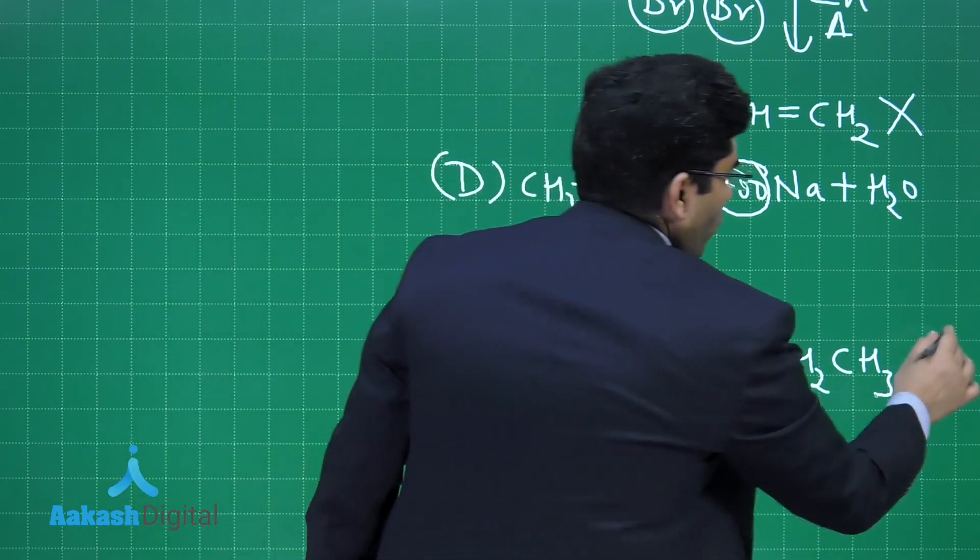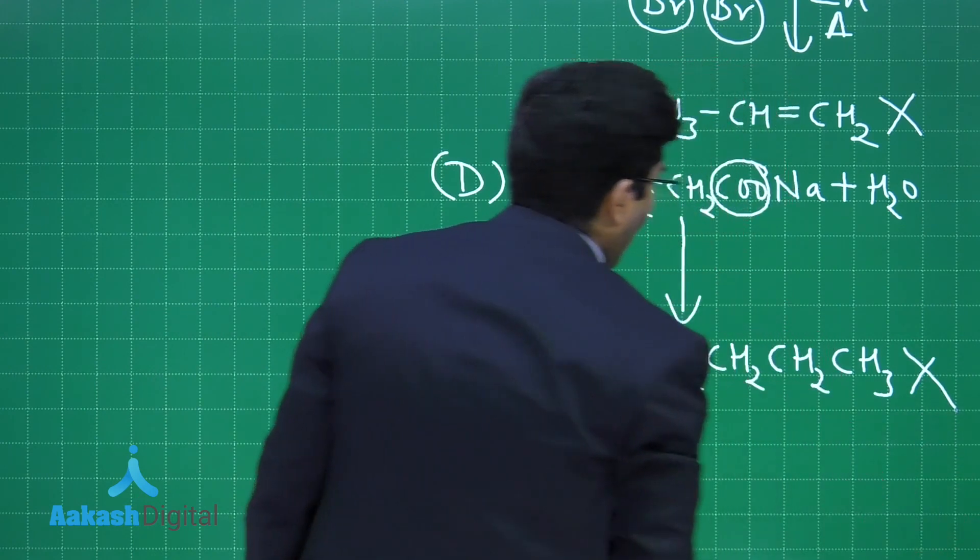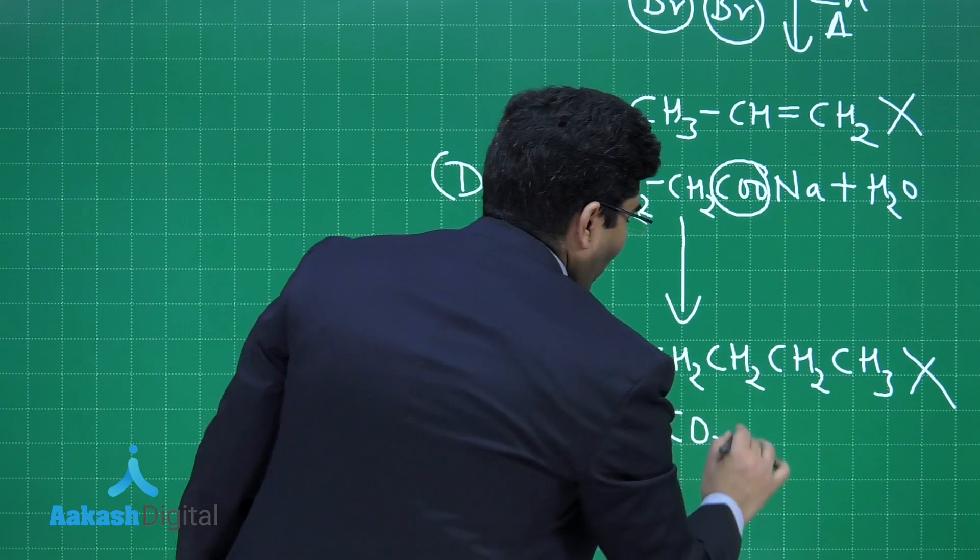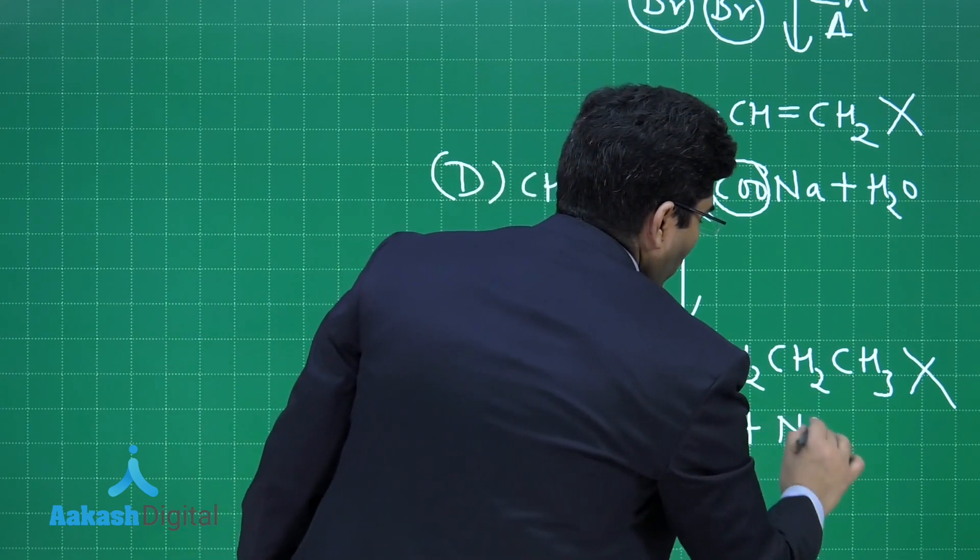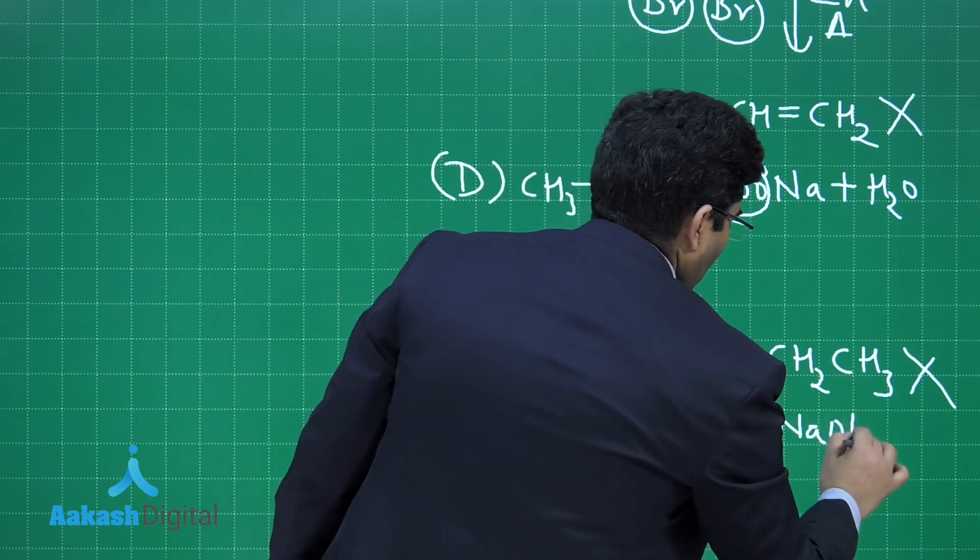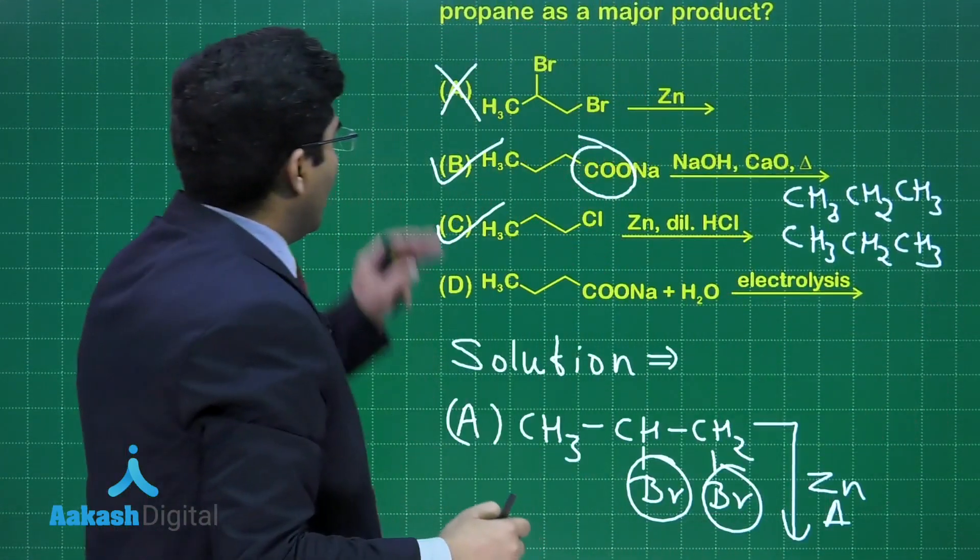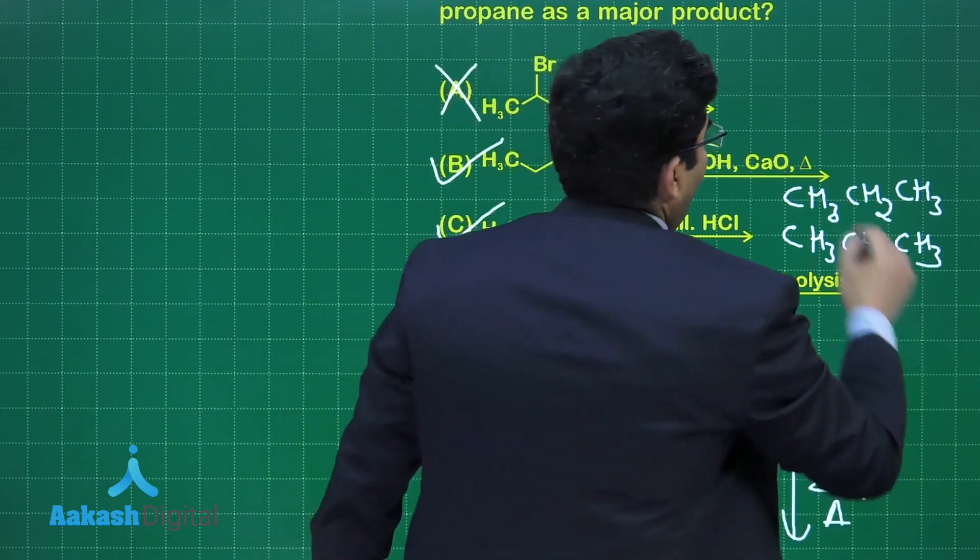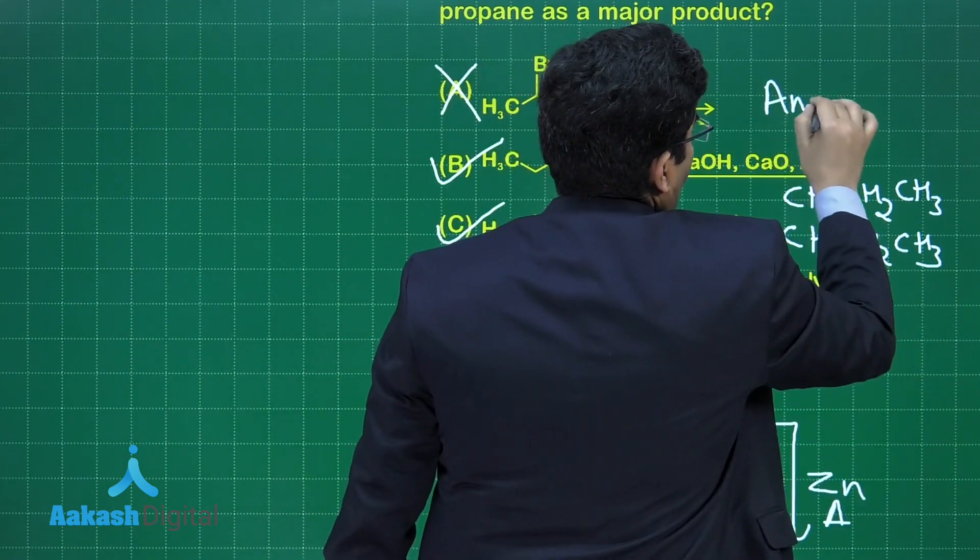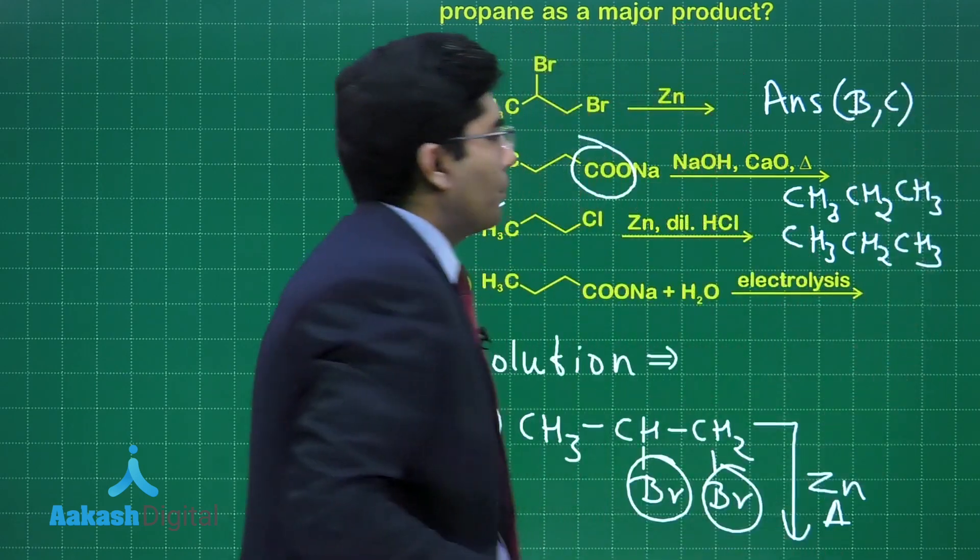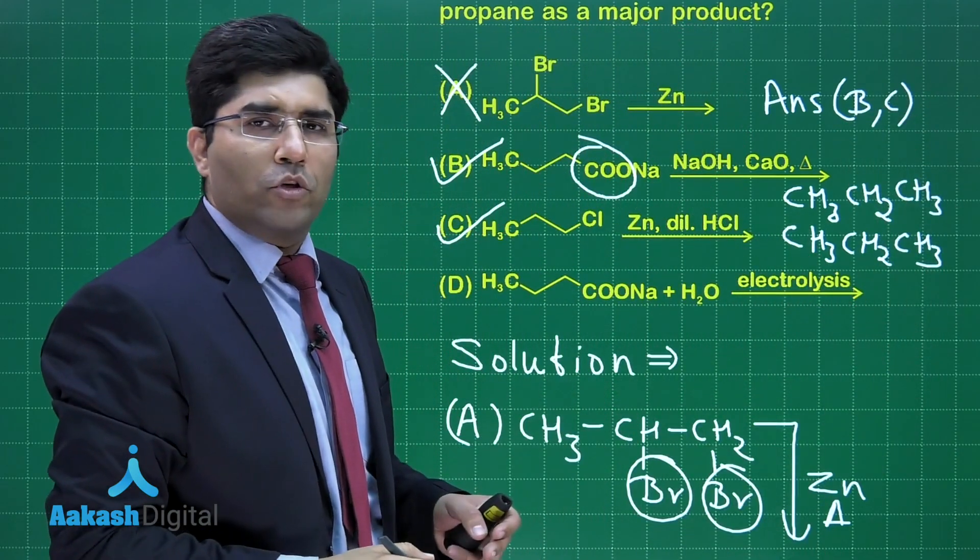In this case we will get hexane. So this is also not our correct answer, and apart from that we get CO₂ and NaOH also in this particular reaction. So our correct options are B and C. Therefore the answer is B and C. Let us move on to the next question.